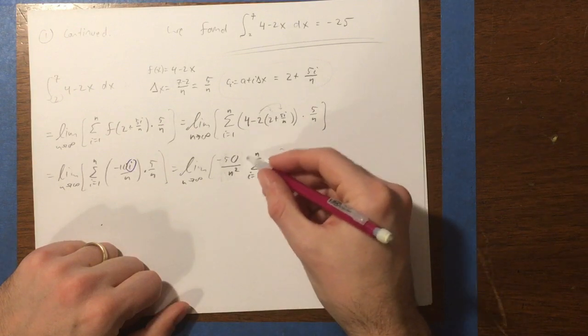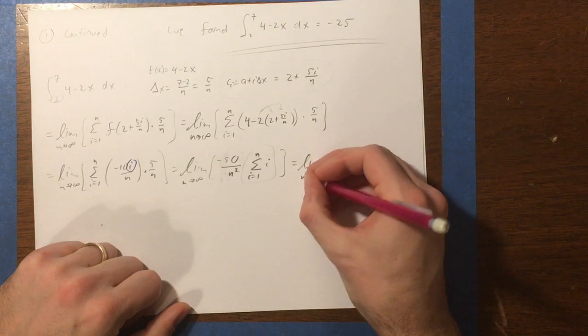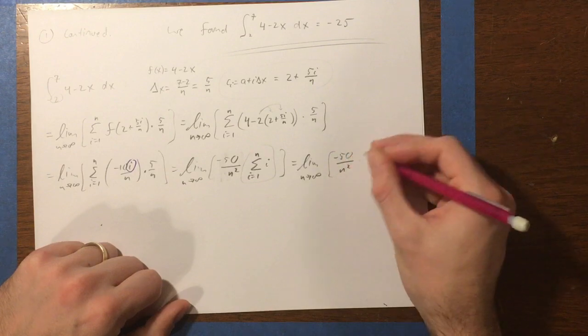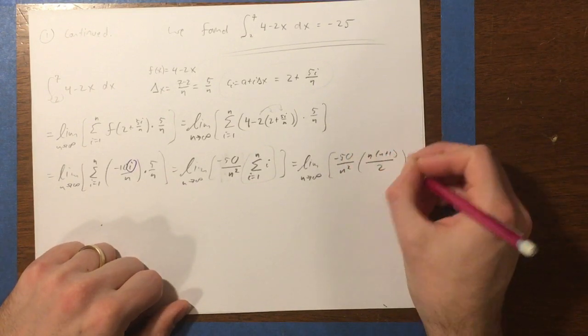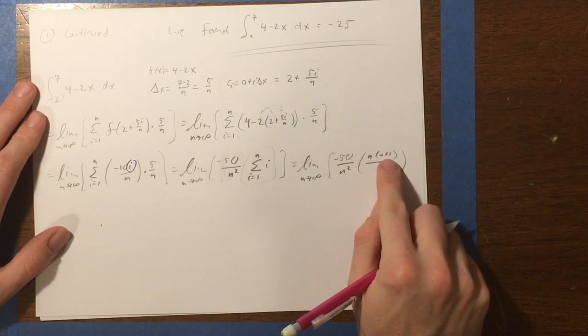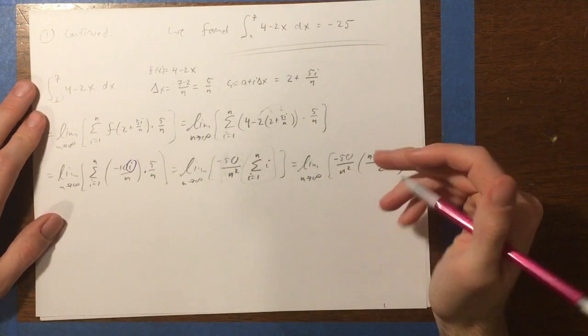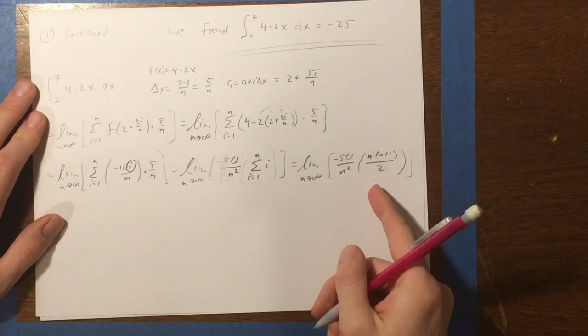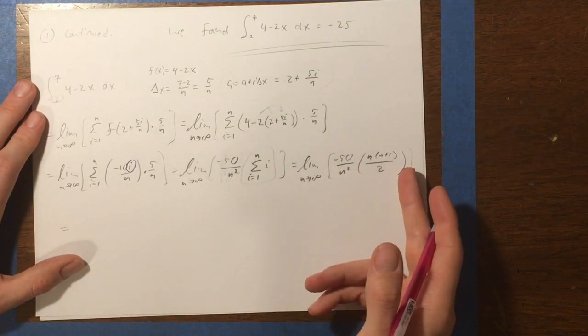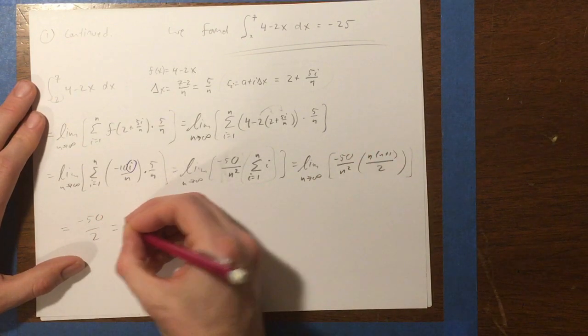Which, that right there is a summation formula I happen to have memorized. It's n times n plus 1 all over 2. Like that. So now, looking at this, we can see the numerator is going to be a quadratic. And the denominator is a quadratic. They're both degree 2. So that means that the limit as n approaches infinity, this is going to be the ratio of leading coefficients. And the leading coefficients as we look at these are going to be negative 50 and 2. So it should be negative 50 over 2, which is negative 25.